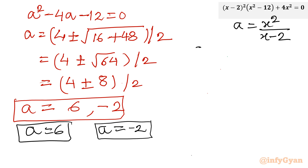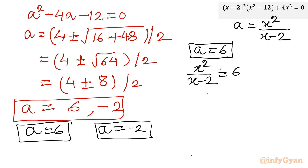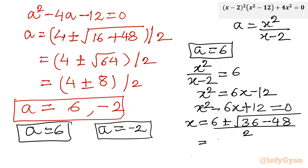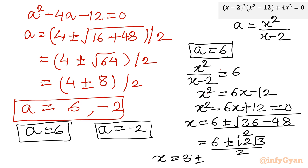For the first case, a equals 6: x squared over (x minus 2) equals 6. Cross multiplying gives x squared equals 6x minus 12, so x squared minus 6x plus 12 equals 0. Applying the Sridharacharya formula: x equals 6 plus or minus square root of (36 minus 48) over 2. The discriminant is negative 12, which gives square root of minus 12 equal to 2i root 3. So x equals 3 plus or minus i root 3. This is one pair of complex solutions.